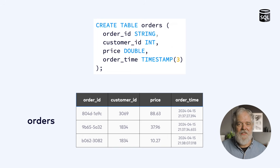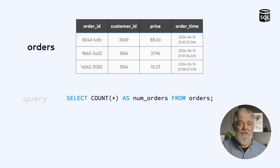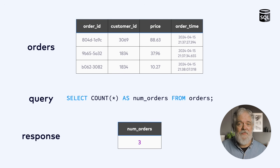Databases hold data that is stored in tables using storage managed by the database. Tables have names like this orders table, and tables store rows of data organized into columns that have names and data types. This orders table has columns for the order ID, the customer ID, the price, and the time the order was placed.